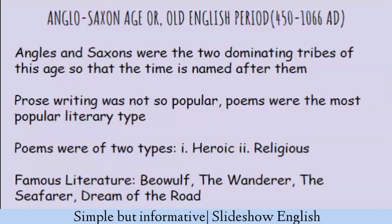The history of English literature starts with the Anglo-Saxon period, otherwise called the Old English period, which starts approximately in 450 AD. This Old English age flows till 1066 AD. In this particular period of time there were mostly poems, because writing in prose was not so popular, and most importantly the storytelling method was not yet developed properly at this point of time.